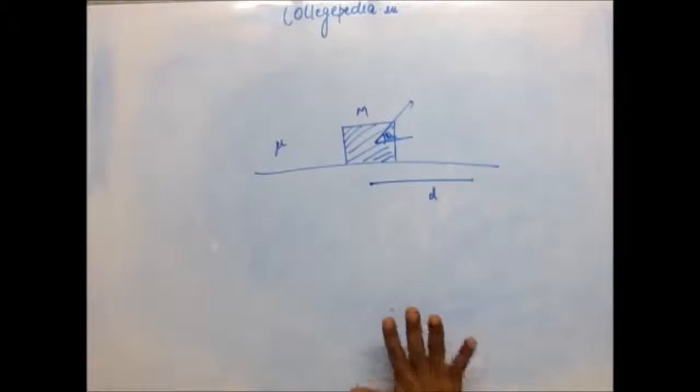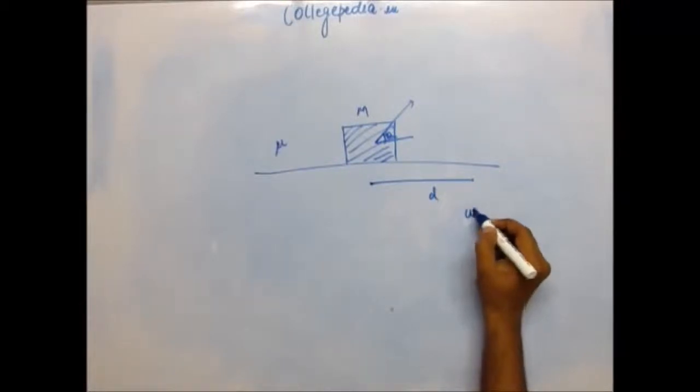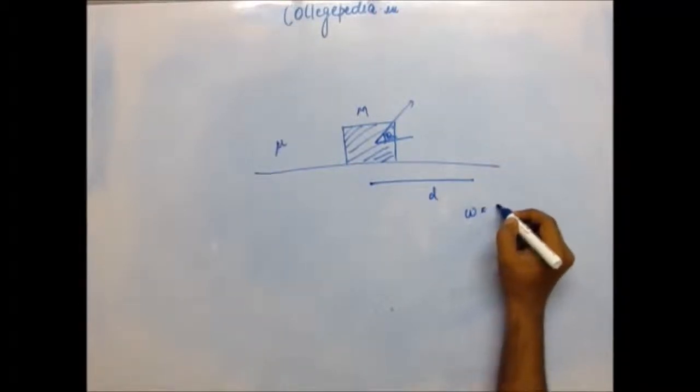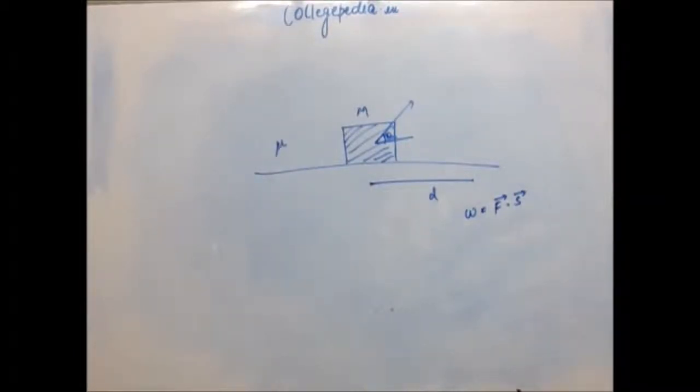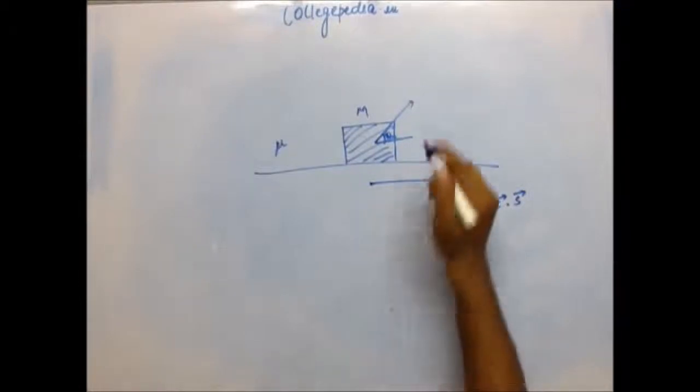Find the work done by the agent which is applying this force when the block moves by distance d very slowly. It is not gaining any kinetic energy. I consider that you have solved it, but the first thing to do is work with the formula we have studied: work is simply force vector dot displacement vector. We don't know the force vector, so you have to find the force first.